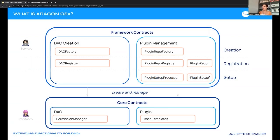If we look at the overarching architecture we really see these two key sections play their roles. I'm going to start with the core contracts specifically. The core contracts are essentially those interfaces that the end user will really be dealing with — the DAO contract — which will hold all of the assets for DAOs, acting like a vault or treasury of the organization.